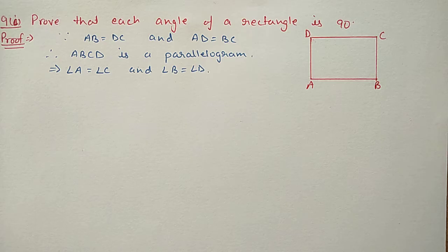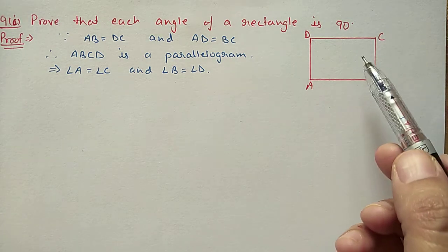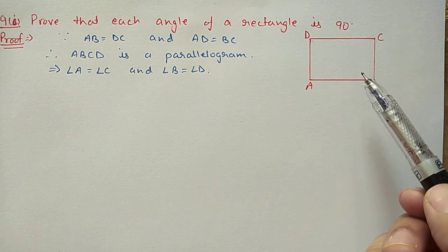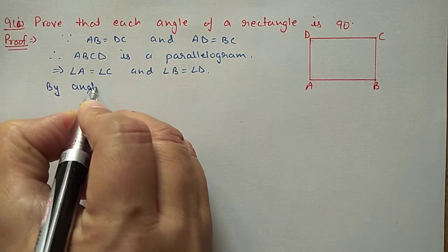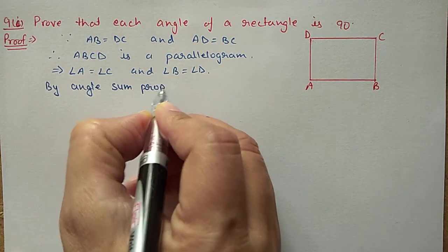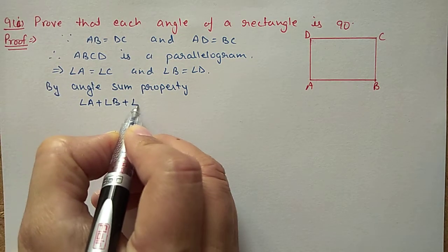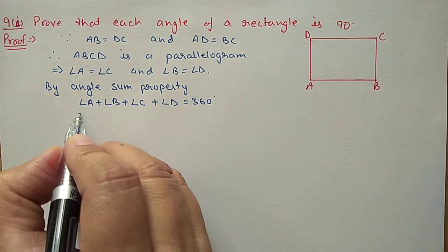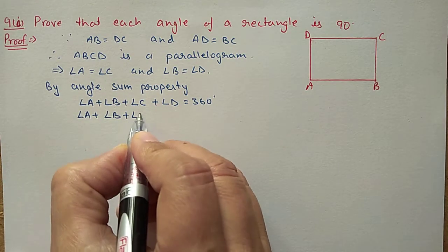Next, question 9 first part: Prove that each angle of a rectangle is 90 degrees. Because the opposite sides of a rectangle are equal, it is a parallelogram, and in a parallelogram opposite angles are equal. So angle A equals angle C, and angle B equals angle D. By the angle sum property of a quadrilateral, angle A plus angle B plus angle C plus angle D equals 360 degrees. Replacing C with A and D with B, we get 2 angle A plus 2 angle B equals 360 degrees.